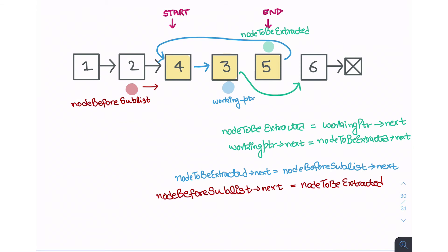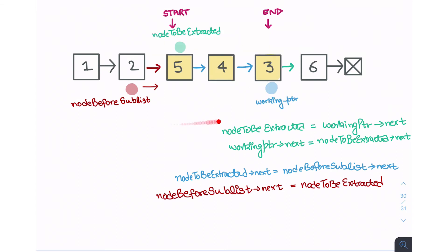The final instruction sets node_before_sublist->next = node_to_be_extracted, updating the pointer to the new first element of the list, completing the extraction and pasting procedure. We've now reached the end of the sublist and this is when we stop. This is how the algorithm works — we continue until we've iterated through the entire sublist. Let's see how we'll write this up in code.